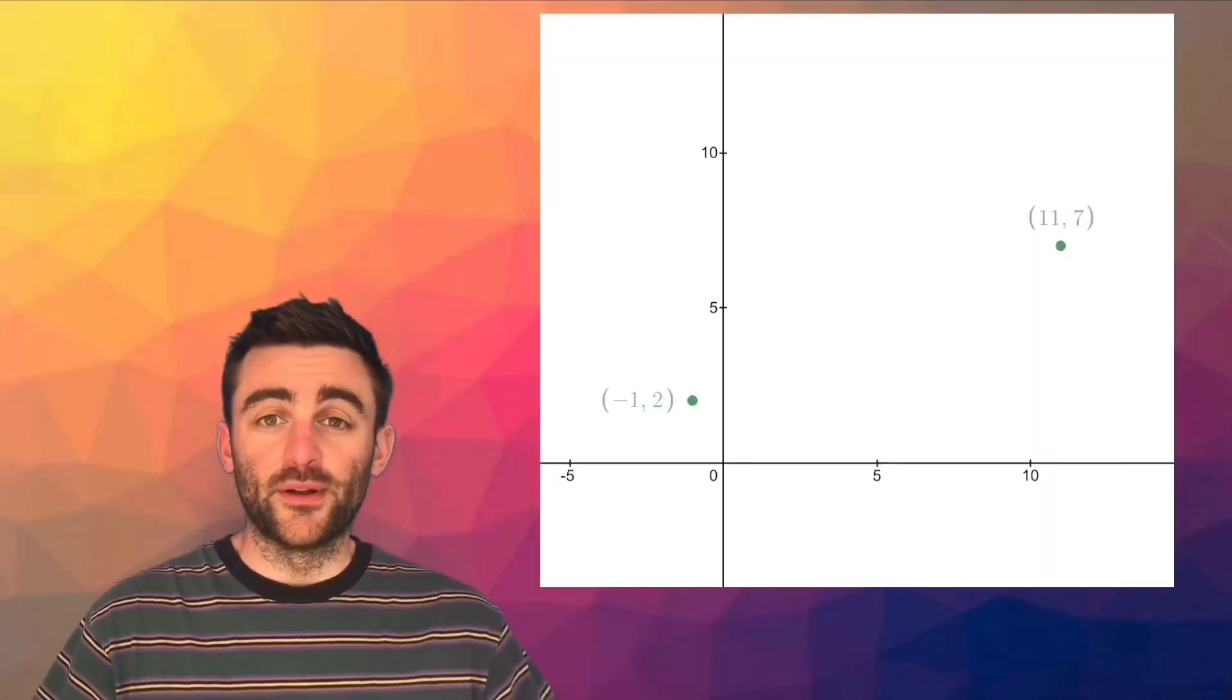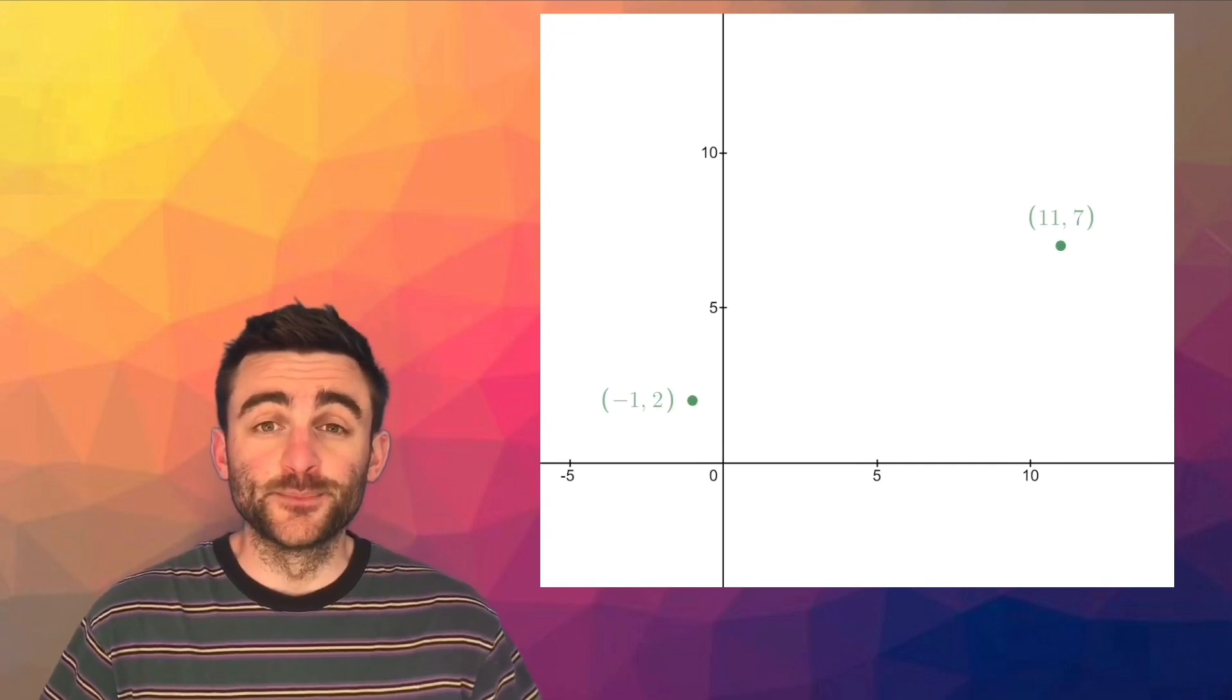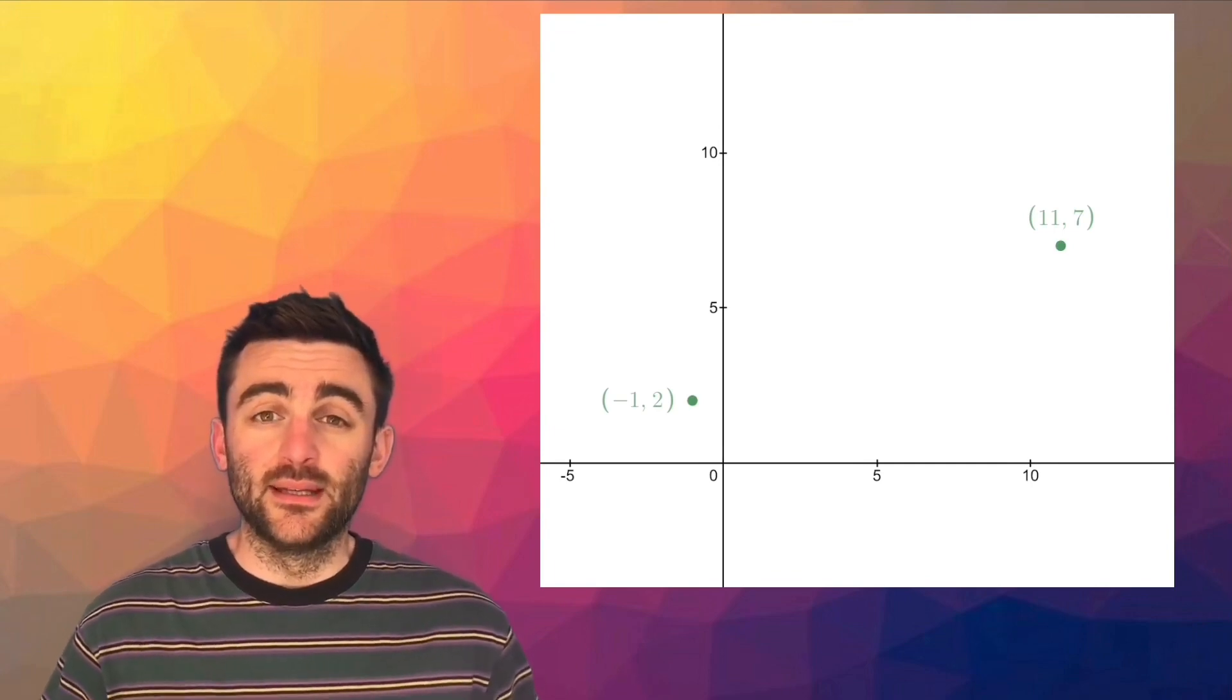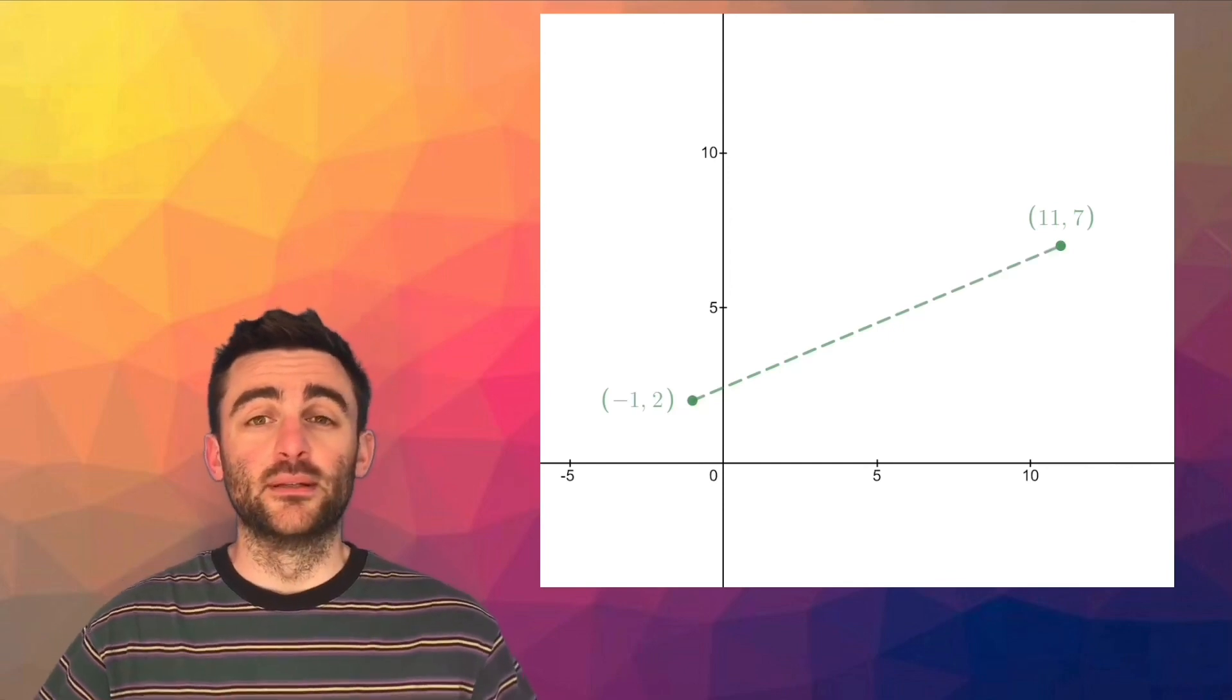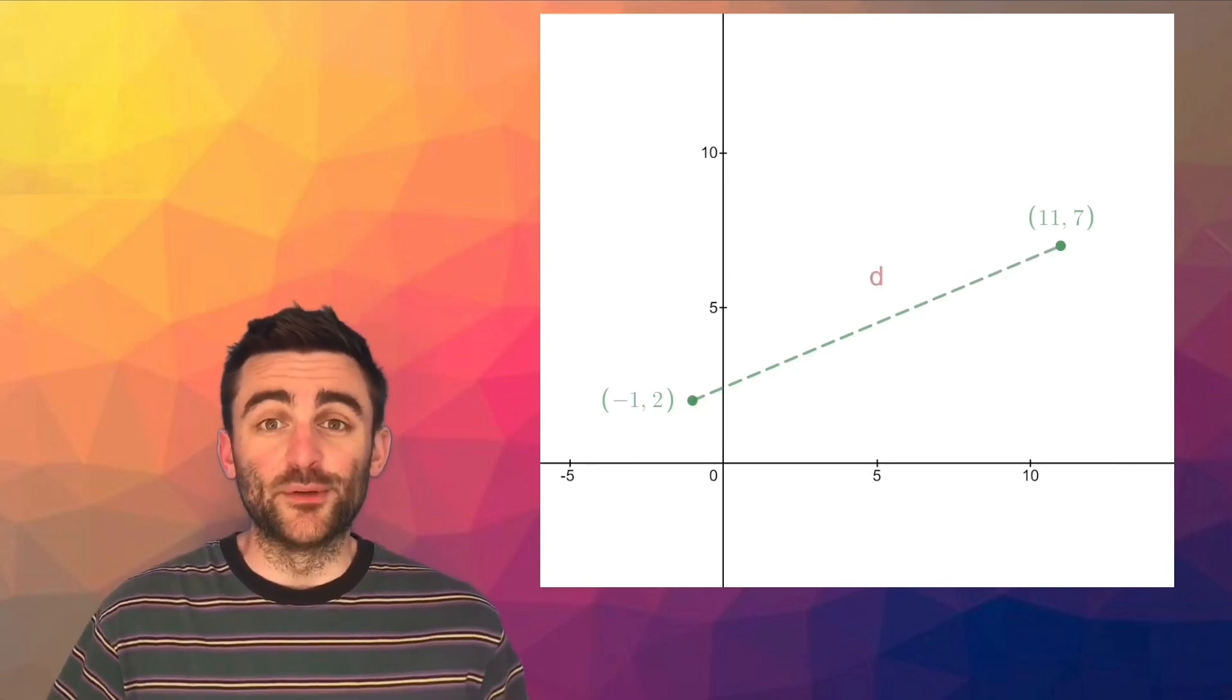When we have two points plotted on a Cartesian coordinate diagram, it is often the case that we will want to find the length of the line segment joining the two points. We call that the distance between the two points.